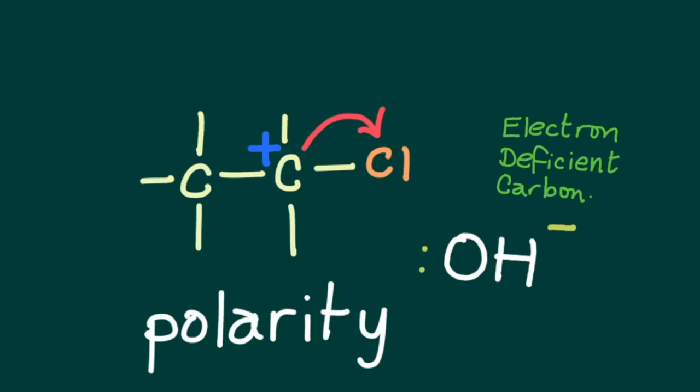A tertiary halogenoalkane would contain three alkyl groups attached to this carbon. These groups could be CH3, C2H5, or C3H7, all alkyl groups in this halogenoalkane.